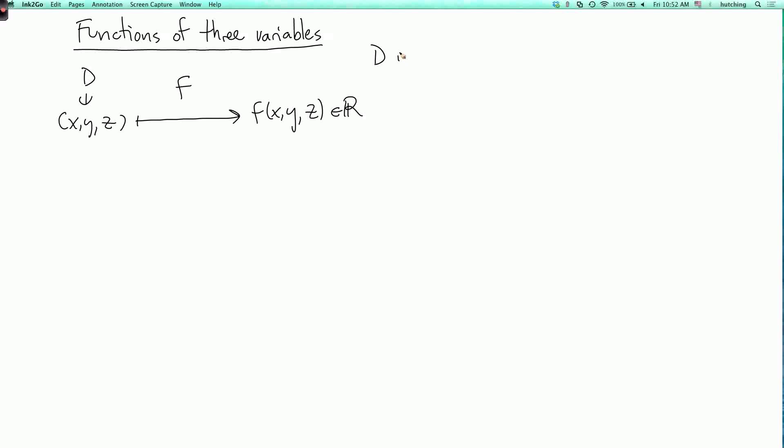So here D is a subset of R³, the set of points where the function f is defined. So this is completely analogous to a function of two variables. The function just depends now on one additional variable z.